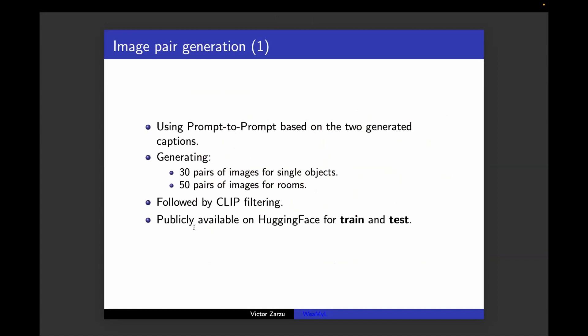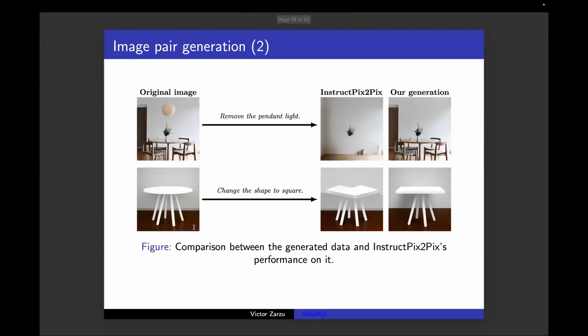The image pairs were generated using Prompt-to-Prompt. For each caption pairs, we generated 30 pairs of images for single object cases and 50 pairs of images for rooms. After that, for each caption pair, for all the generated image pairs, we take the top four pairs that pass some CLIP filtering pipeline based on the similarity of images in order to remove noise from the generated images. These are some examples. The original image, the result of InstructPix2Pix, it can be seen it's not very good, and the generation of our dataset.